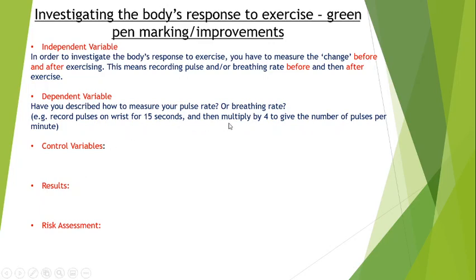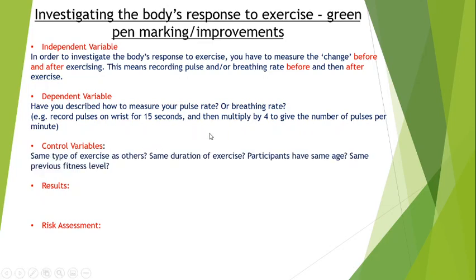Control variables are what you're going to keep the same, and this will change depending on what you've planned. Some of you might be doing it all yourself. If you've done just one go with no repeats, that's not going to be a very valid investigation. How do you know the one time you've done it isn't an anomaly? How do you know it's valid? So if you're doing it yourself, I'd recommend at least three repeats — minimum three repeats.